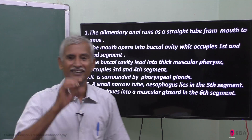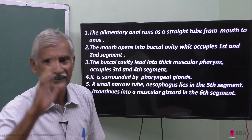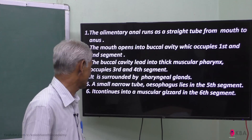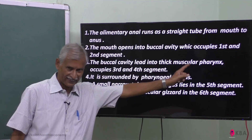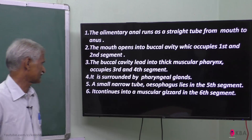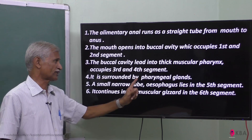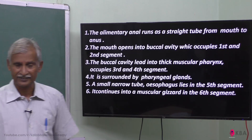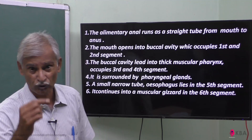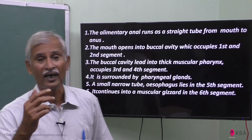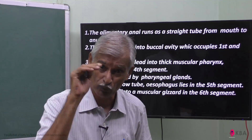The buccal cavity leads to a thick muscular pharynx, that is in the third and fourth segment. The pharynx is surrounded by pharyngeal glands — secretory glands — which produce digestive enzymes.